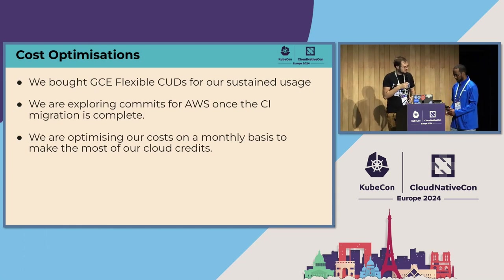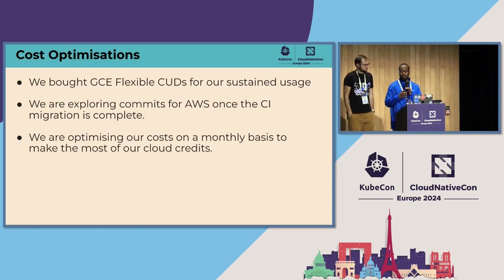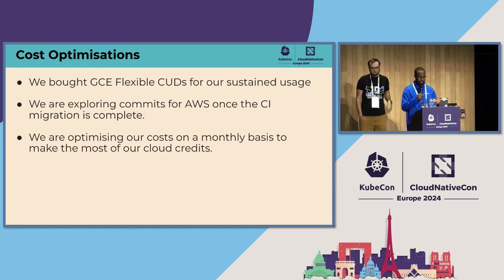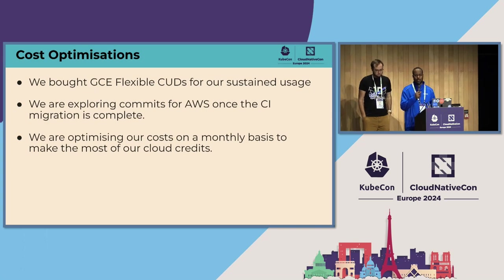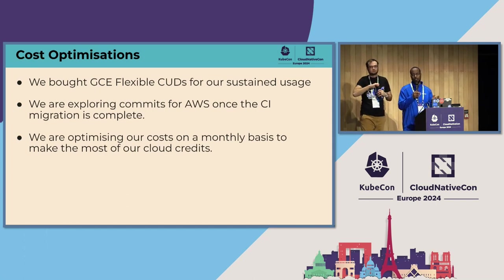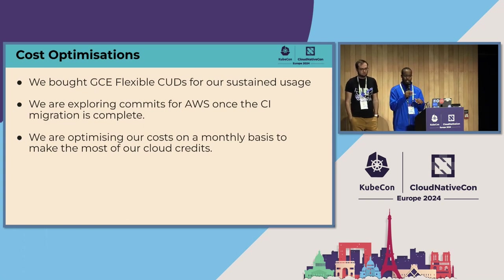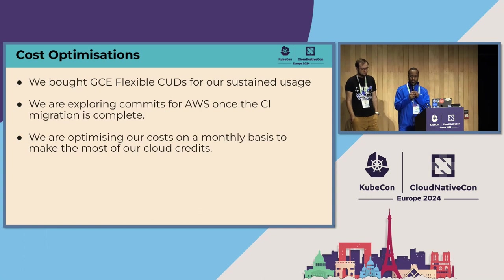Now handing off to Mohamed. Hi, I'm Mohamed — I work as a SIG K8s Infra tech lead and at Cisco as an SRE. On cost optimizations: last year we ran out of money and had to scramble for credits. We did some cost optimization and are planning more this year. For Google Cloud, we bought committed use discounts for the base amount of CI we run every day. We want to explore the same for AWS with reserved instances. We also review our costs monthly to identify inefficiencies.